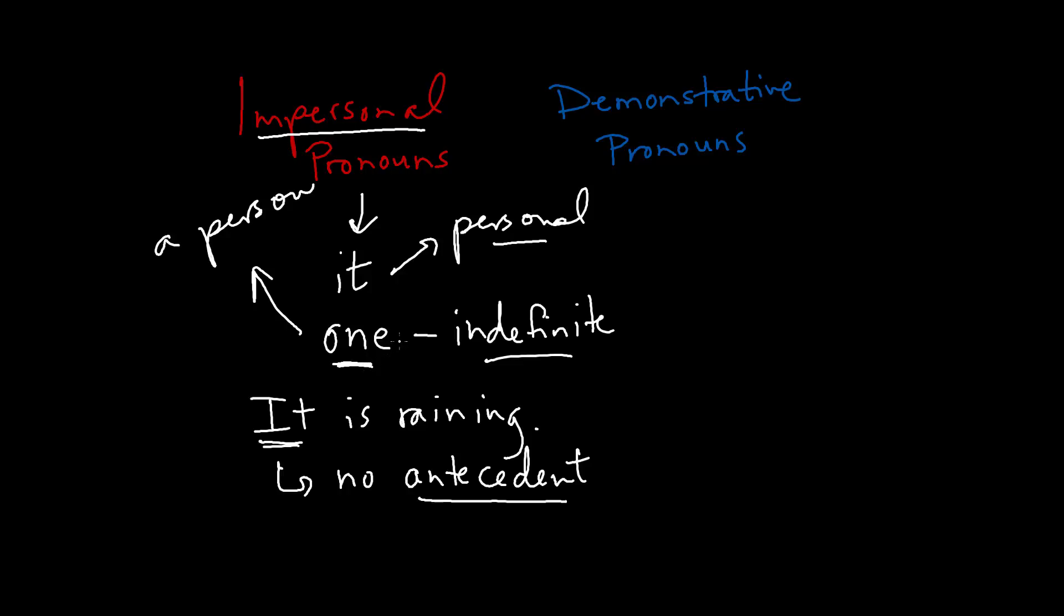Let's move on next to the demonstrative pronouns. And there are a number of these. So we have this, that, those, and these. I guess I should have switched these two around as you'll see in a second, but it's fairly clear that there's just four demonstrative pronouns.